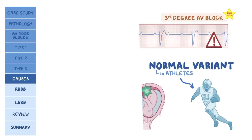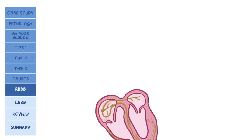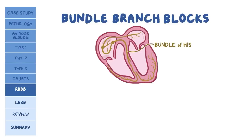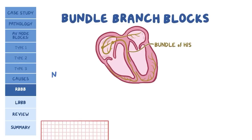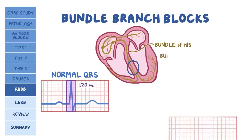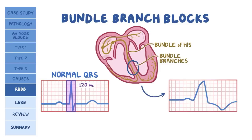The next type of conduction block occurs in either the left or right branches of the bundle of His, and are called bundle branch blocks. In normal ventricular depolarization, the QRS complexes are narrow — that is, less than 3 small boxes or 120 milliseconds. As a general rule of thumb, all bundle branch blocks cause the QRS complexes to appear wide, because we're delaying the time for complete depolarization of both ventricles.